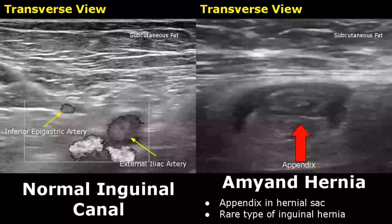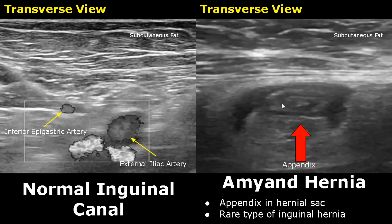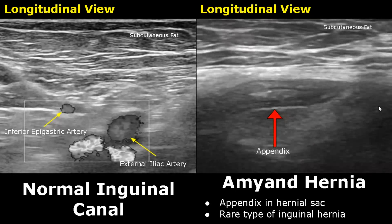An Amyand hernia is a rare type of inguinal hernia in which the appendix is seen in the hernia sac. Here is a longitudinal image of an Amyand hernia — the appendix is seen in the hernia sac.